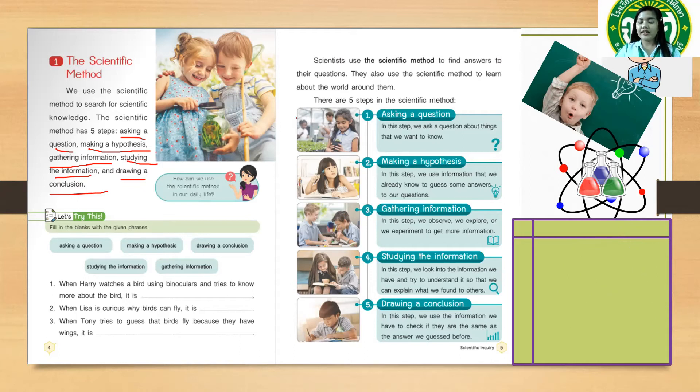Number four: studying the information. In this step, we look into the information we have and try to understand it so that we can explain what we have found to others. So if you are finished gathering the information, you are going to study.